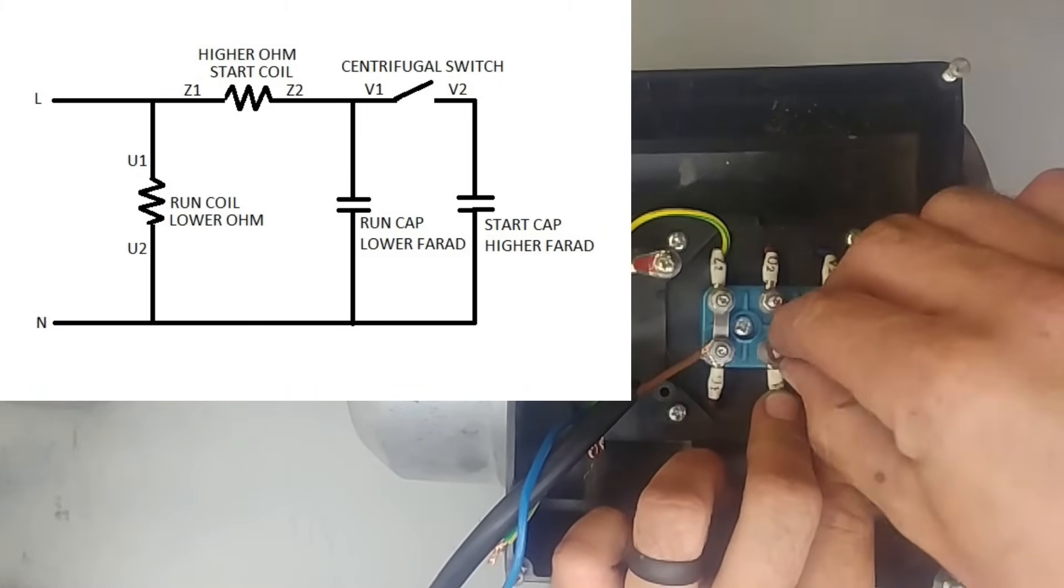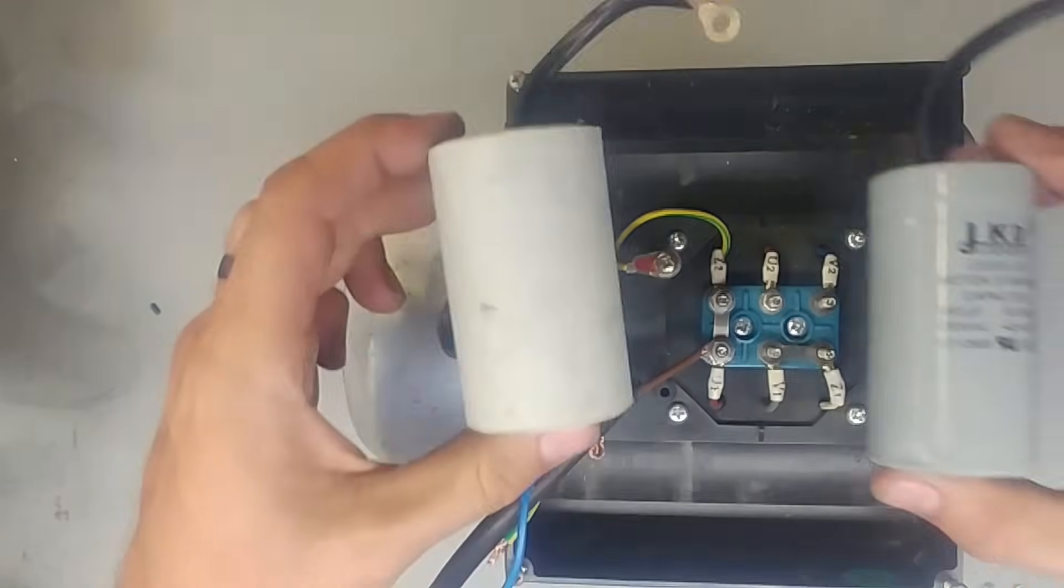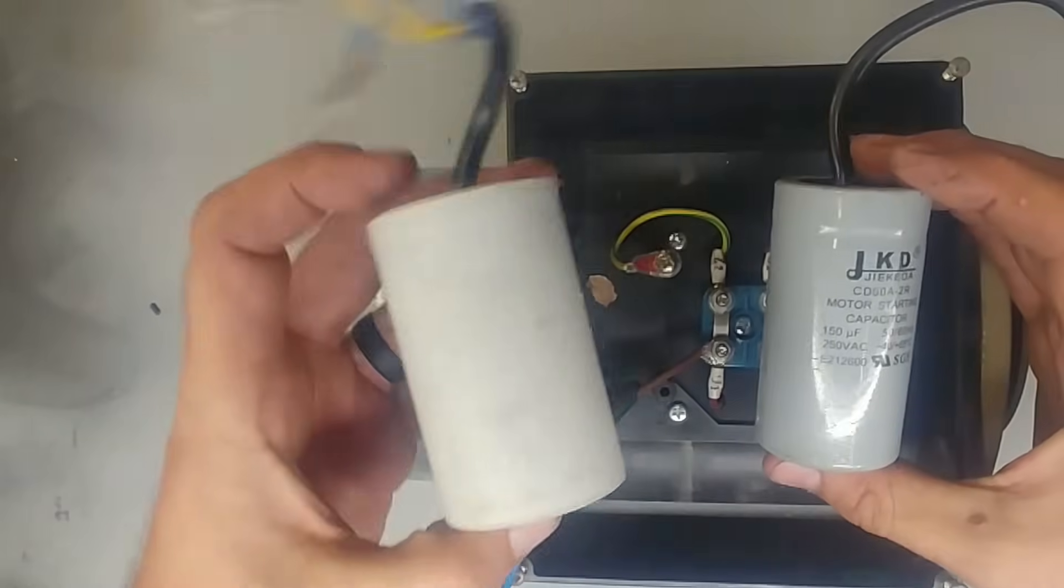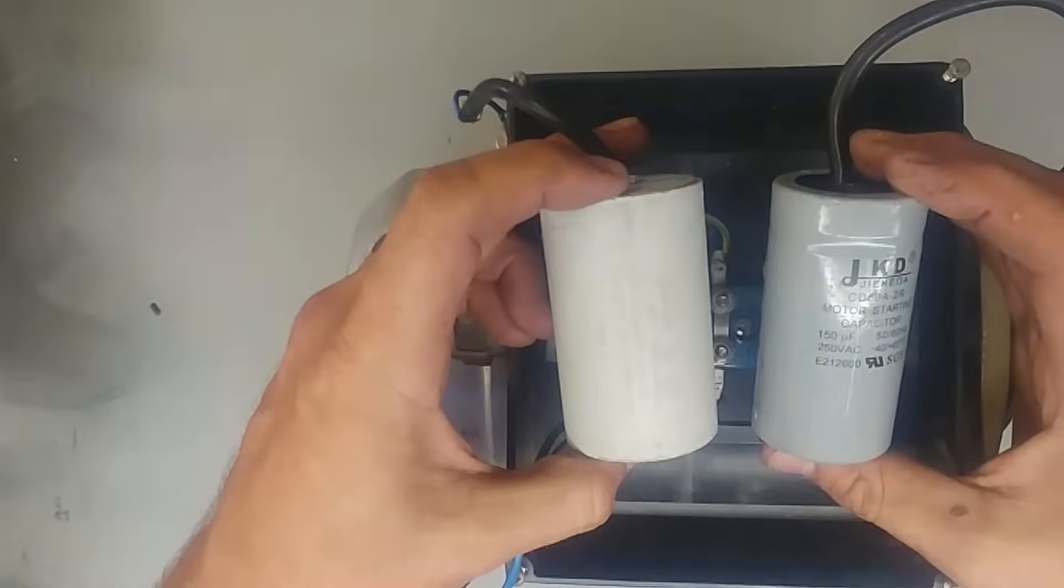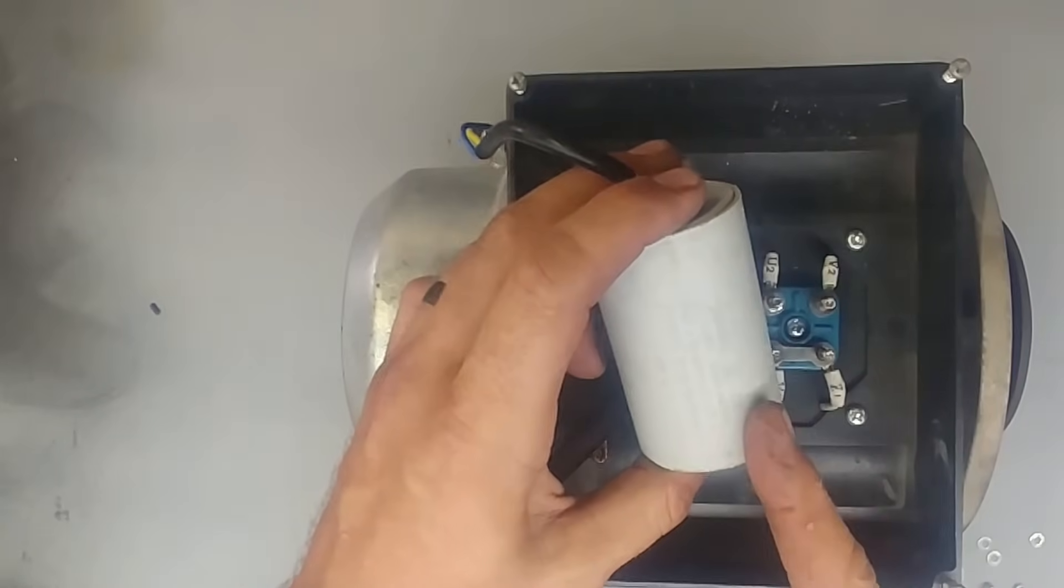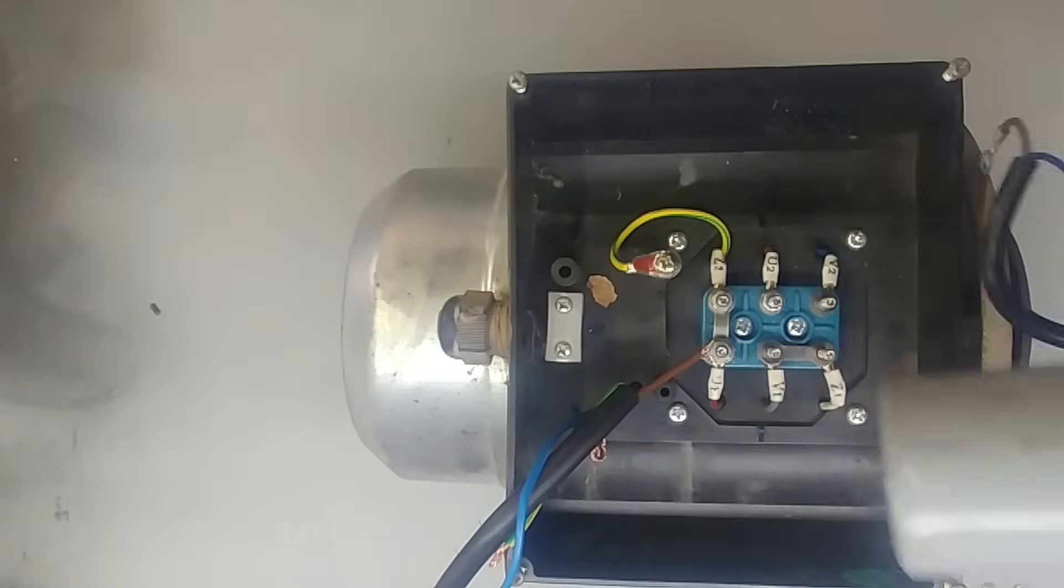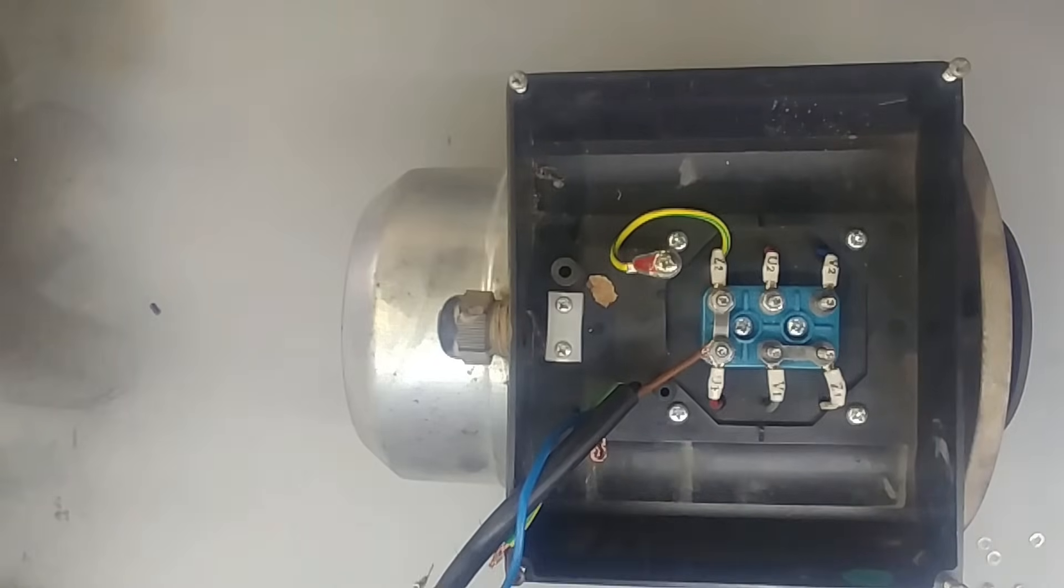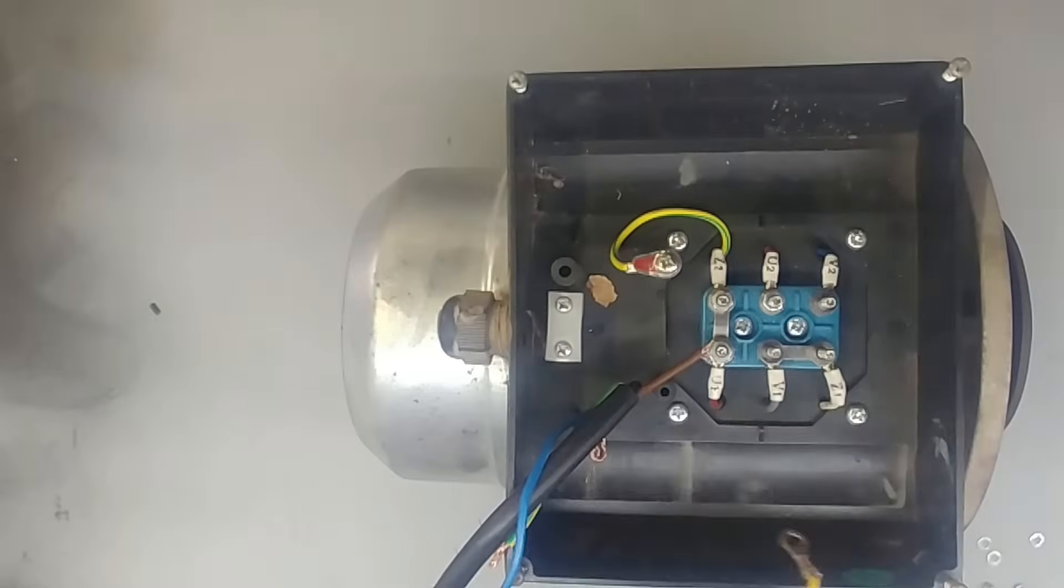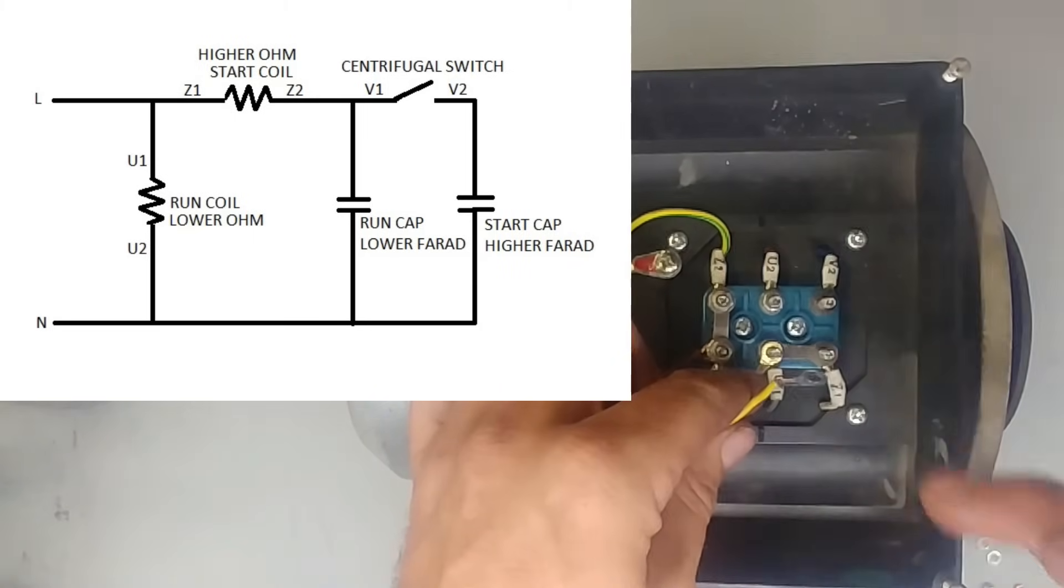Now you get two capacitors with these motors. One has a higher microfarad reading than the other one. Now this one has a microfarad reading of 150 and this one has a microfarad reading of 25. So usually within 5 to 40 would be your running capacitor, and the one with the higher capacitance would be your starting one. This one needs to be switched off by the centrifugal switch. So in this case the running capacitor is going to be my 25 microfarad capacitor, which I'm going to connect with my centrifugal switch and my starting coil.